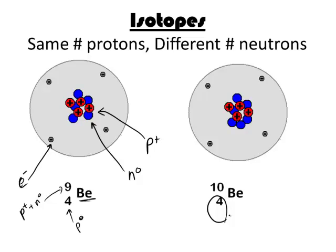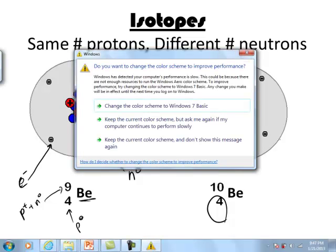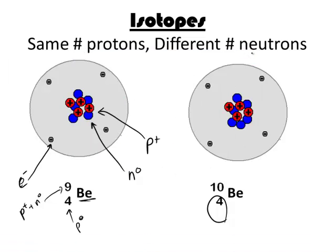The difference between these two atoms is that they are isotopes of one another. So isotopes are atoms with the same number of protons, so they have the same name, but they have a different number of neutrons. So both of these have four protons, they both have four electrons which balance the charge, and then they have a different number of neutrons.